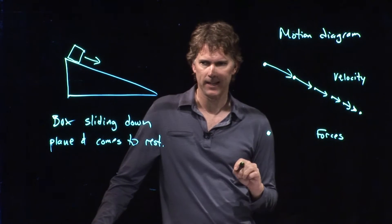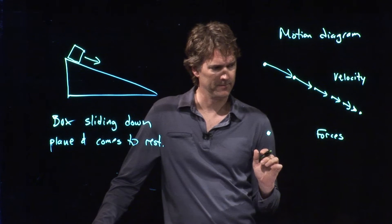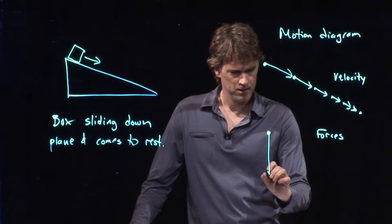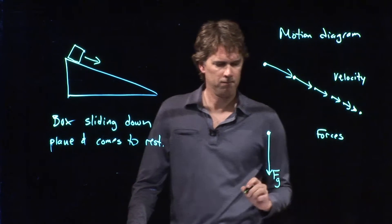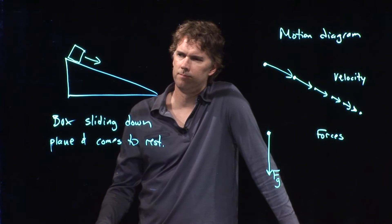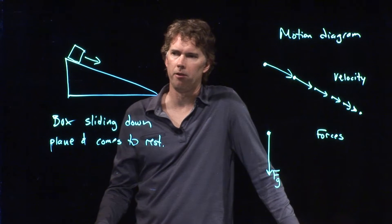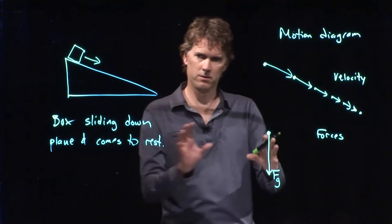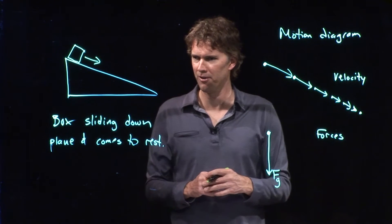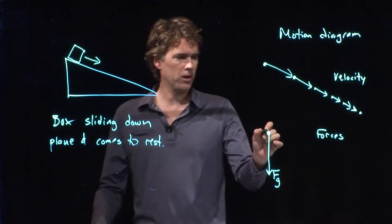What is one force that is acting on the block? Ben says gravity is pulling straight down. Okay, gravity is pulling straight down. Why didn't I make gravity pull down the plane, Ben? Because no matter what, it's pulling towards the Earth. Exactly right — it's always pulling towards the center of the Earth. So if you ever draw gravity not straight down, something's wrong. Gravity is always towards the center of the Earth, so always draw gravity straight down.